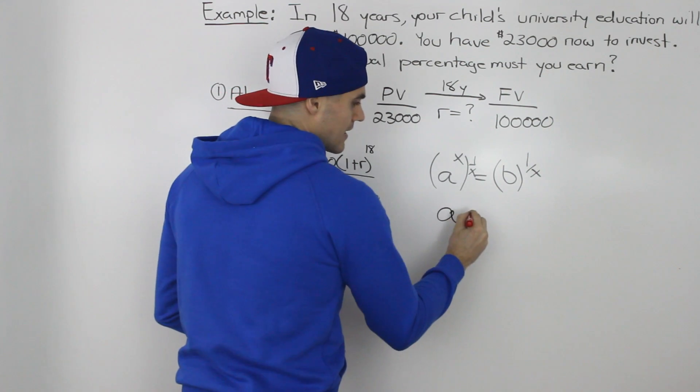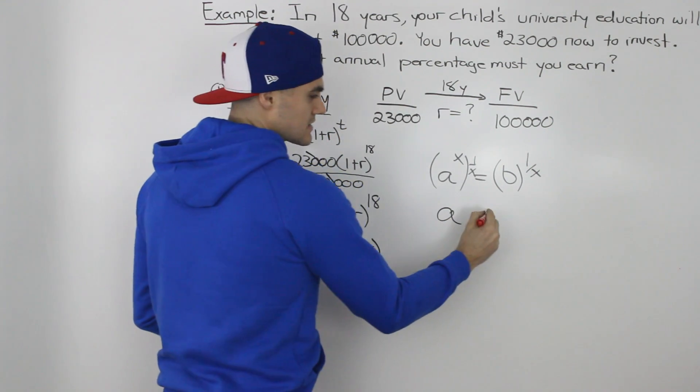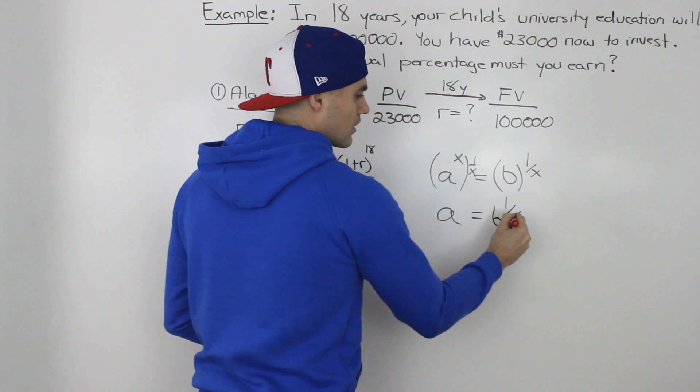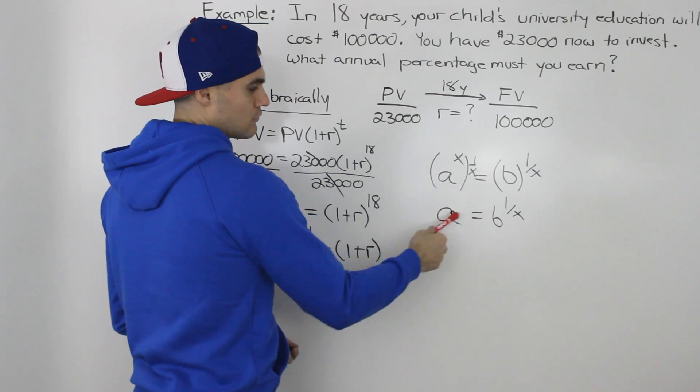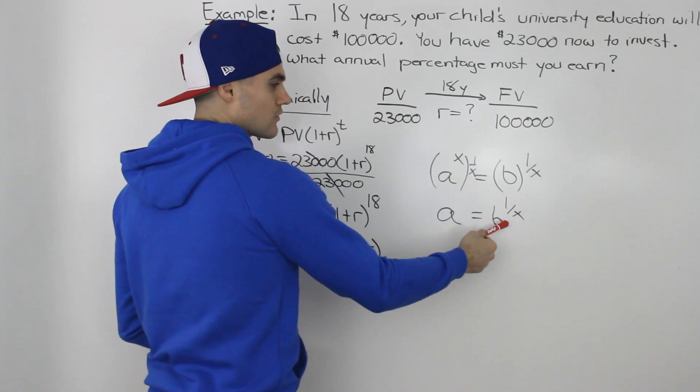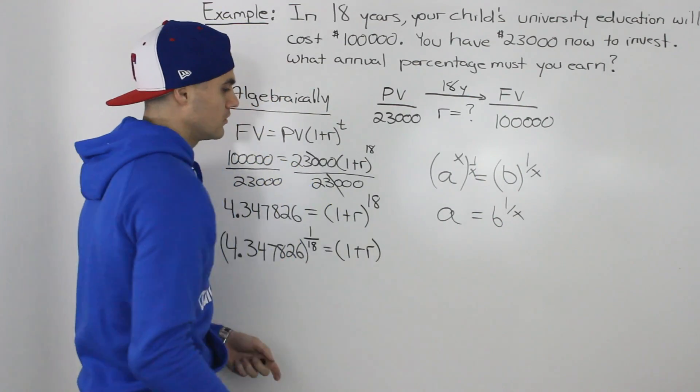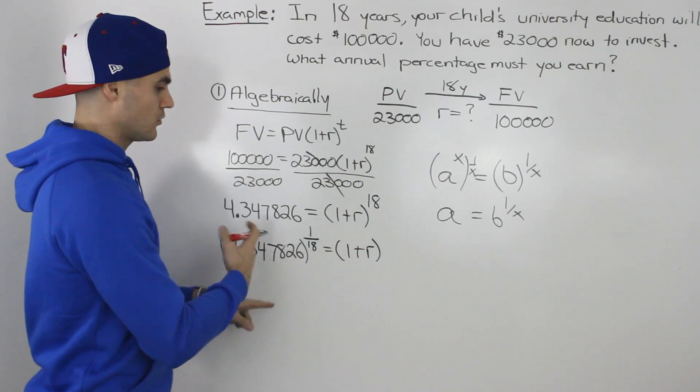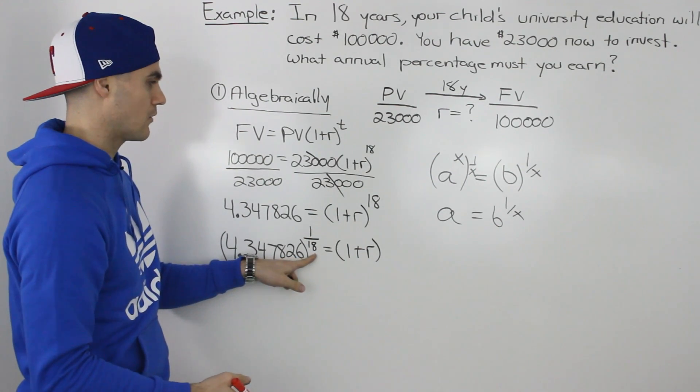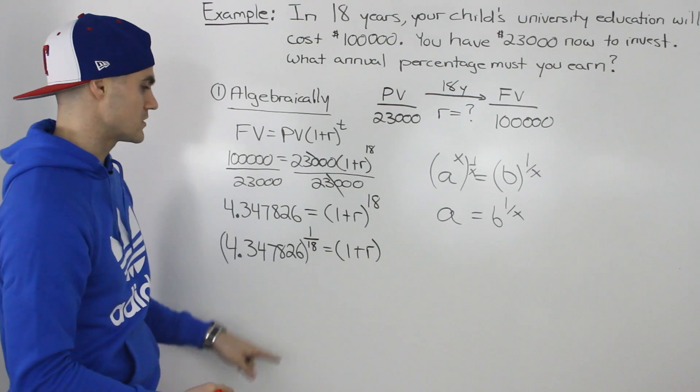Notice how now A is by itself, and we have B to the power of 1 over X. If we want A by itself, we take the other side to the power of the reciprocal. Same thing here. If we want to get 1 plus R by itself, we take both sides to the power of the reciprocal of that exponent, to the power of 1 over 18.